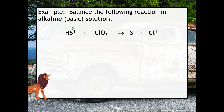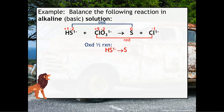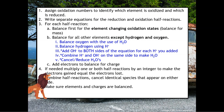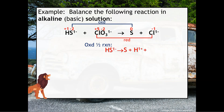Let's try the alkaline example. We assign oxidation numbers: sulfur goes from −2 to 0, so it's oxidized, and chlorine goes from +5 to −1, so it's reduced. For the oxidation half reaction, we balance first for the element changing oxidation states — that's already balanced. There are no oxygens, so we skip that step. There's one hydrogen on the left, so we need one hydrogen on the right. But since this is alkaline solution, H+ isn't floating around — it's OH-. So we add one hydroxide to the right and one hydroxide to the left, then combine the H+ and OH- on the same side to make one water.